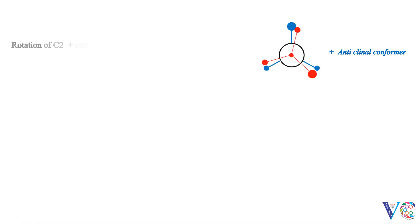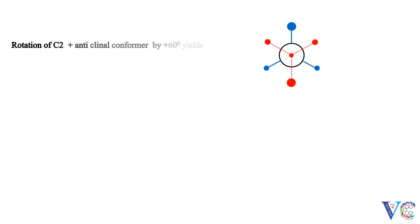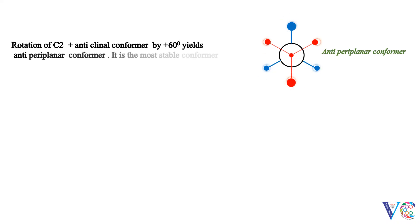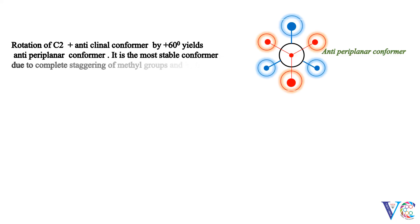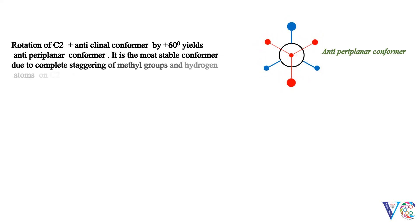Rotation of C2 in the plus anticlinal conformer by plus 60 degrees yields the anti-periplanar conformer. It is the most stable conformer due to complete staggering of methyl groups and hydrogen atoms on C2 and C3 carbon atoms.